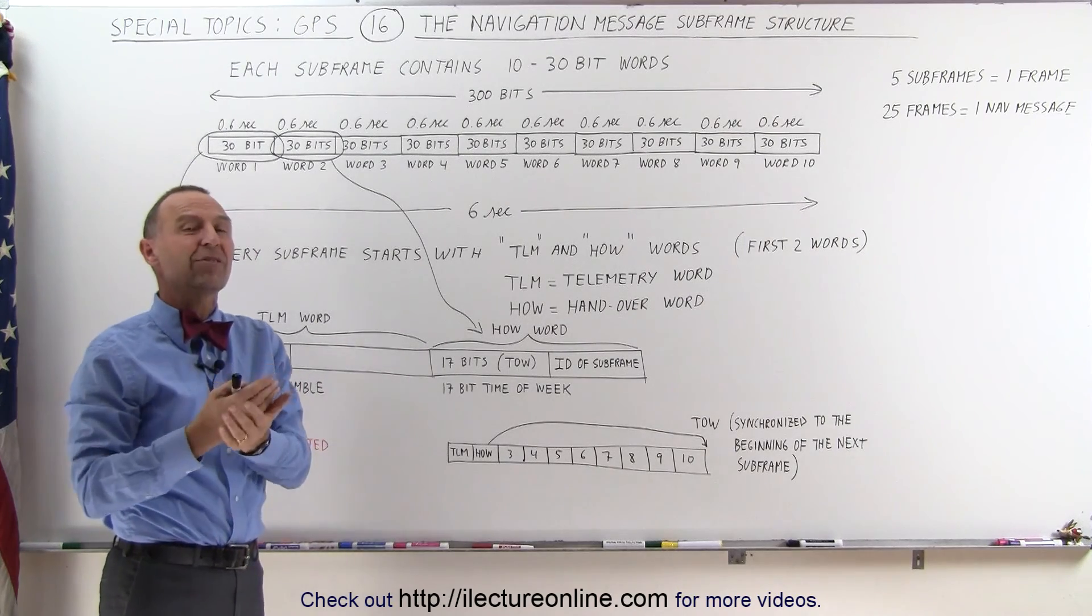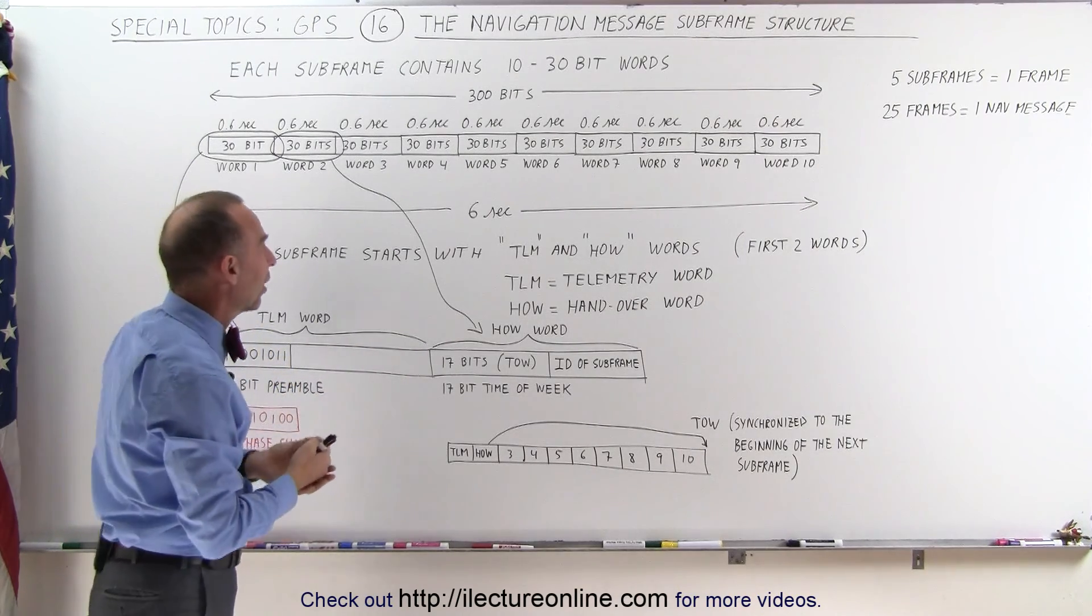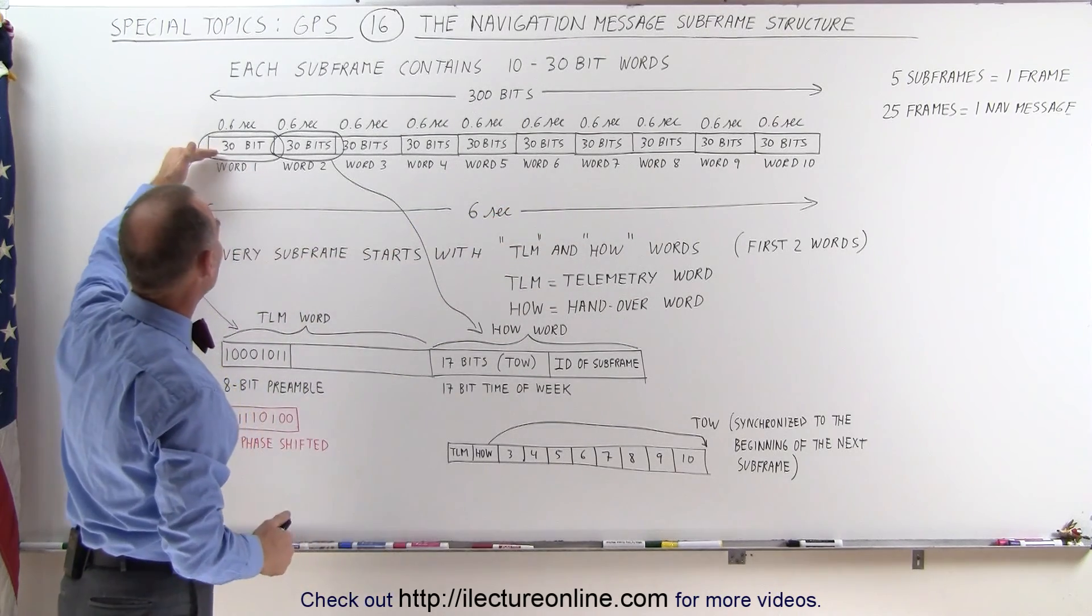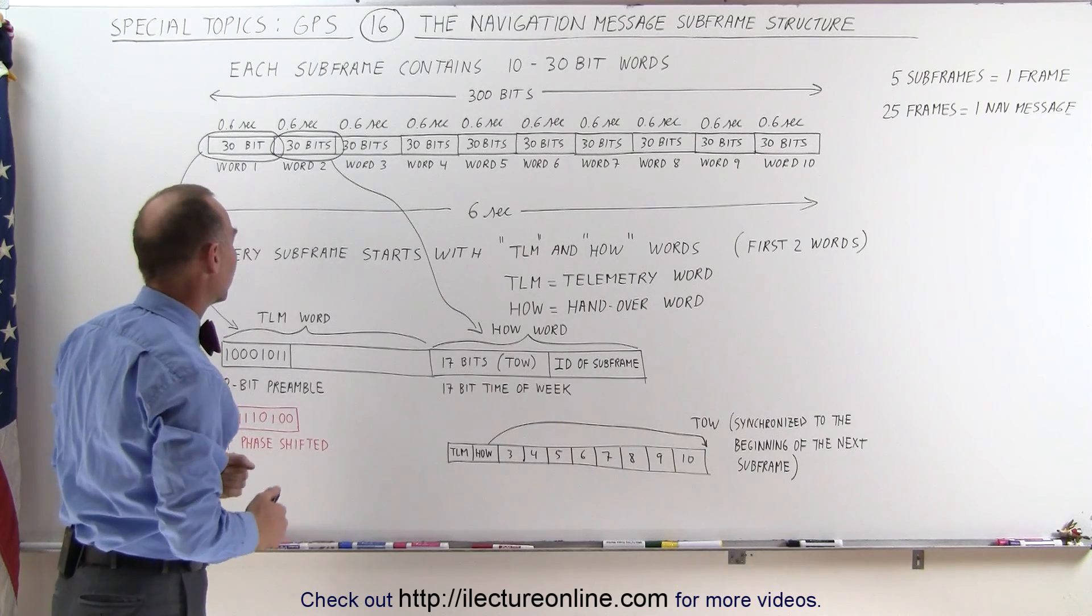Remember, there's 50 bits that are being sent every second on the navigation message. So here you can see we have 10 words, each containing 30 bits, each taking 0.6 seconds to transmit.